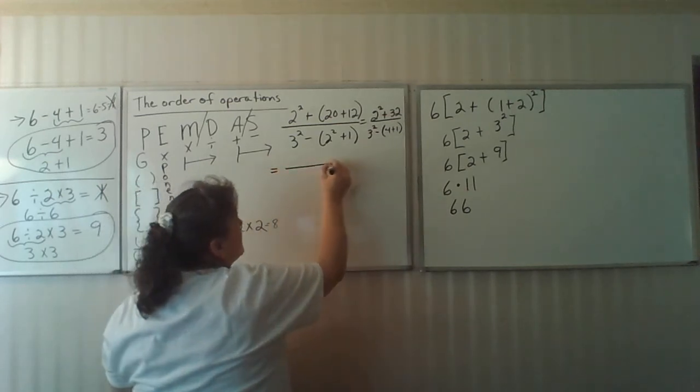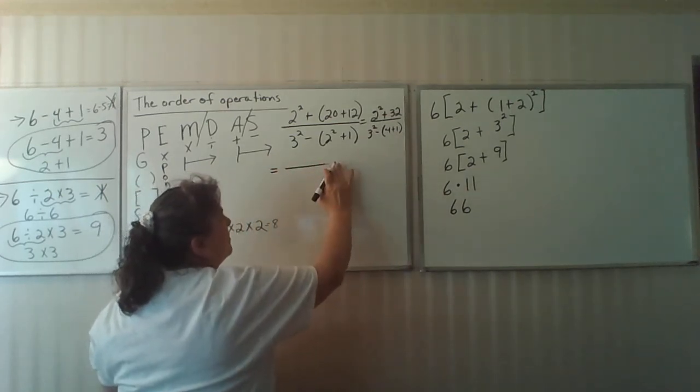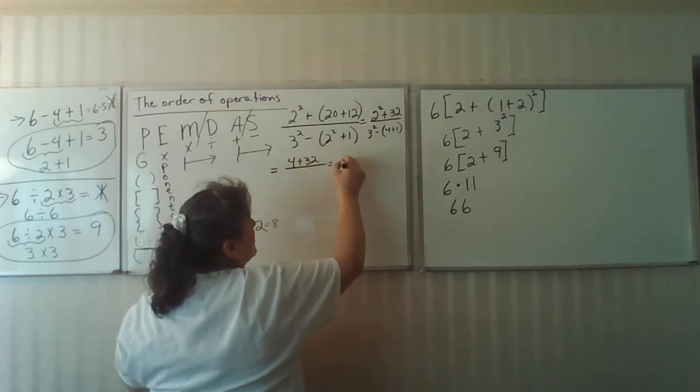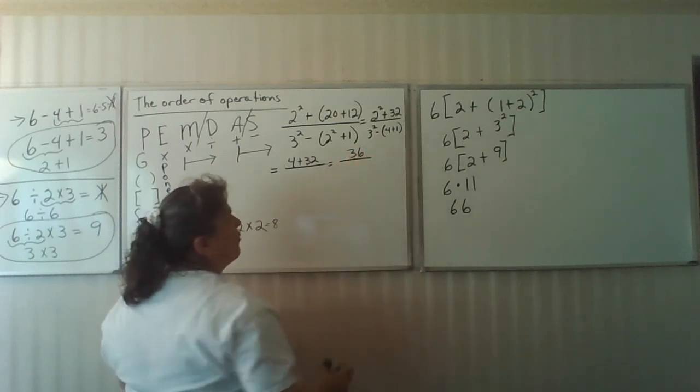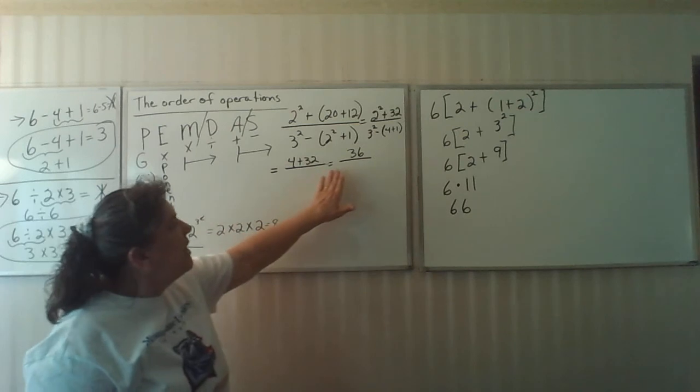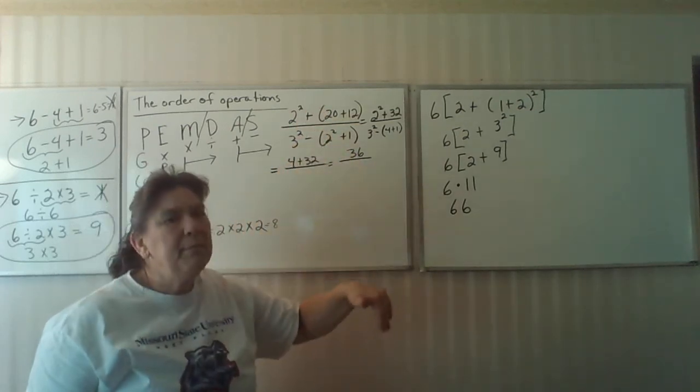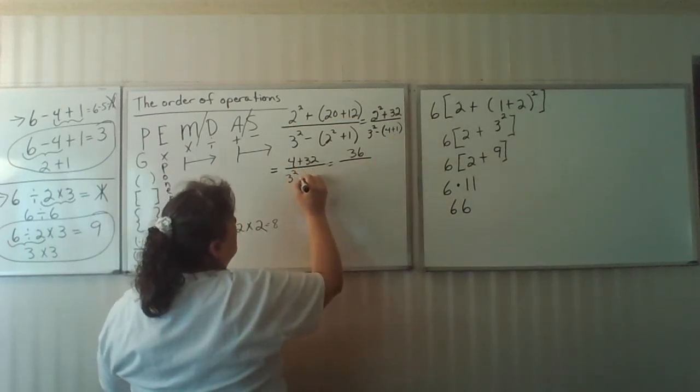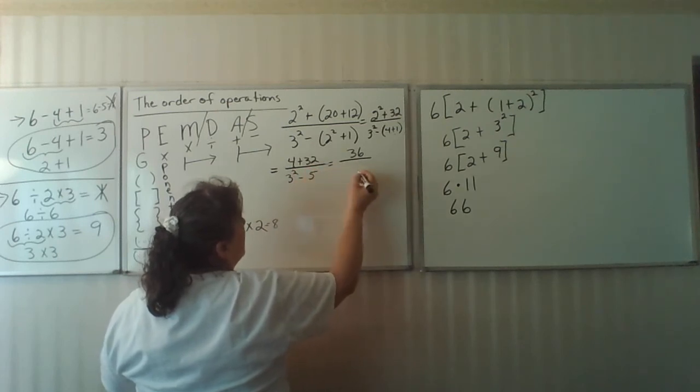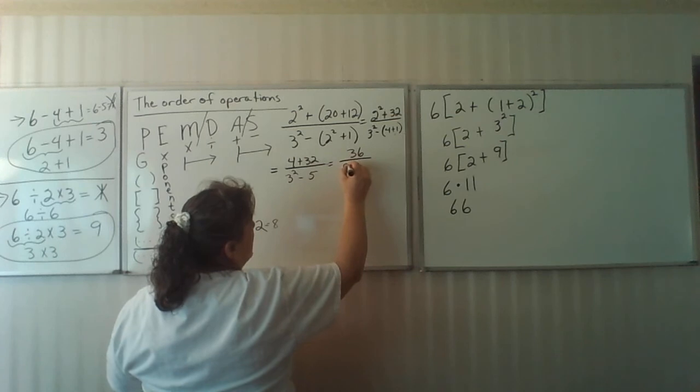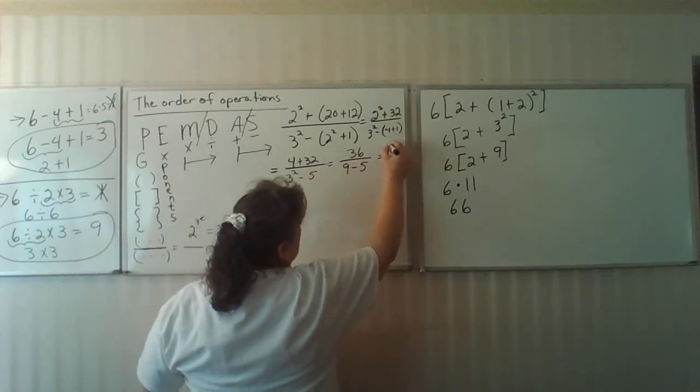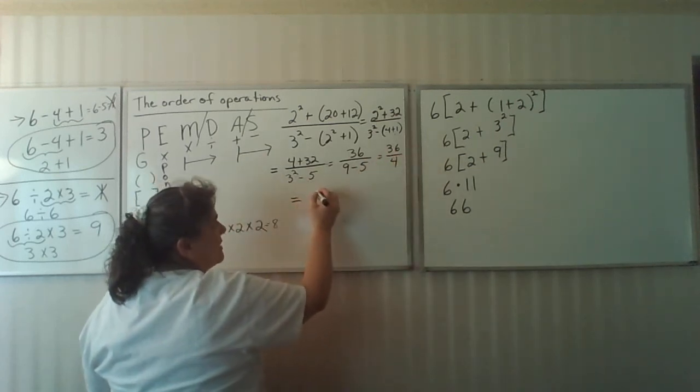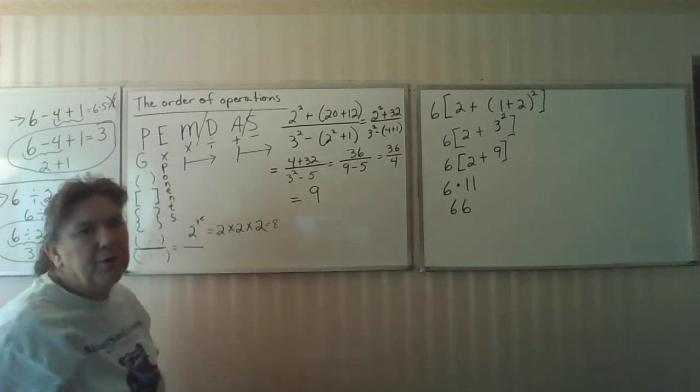Now we're going to go down to the next level. 2 squared is 4, so 4 plus 32. If you want, you can just go to the next one and say that's 36 because 4 plus 32 is 36. So you don't have to do top and bottom. You can do all the top and then do all the bottom if you want to. So here we have 5. So I have 3 squared minus 5. 3 squared is 9, so 9 minus 5 gives me 36 over 4. Now that division indicates 36 divided by 4, which is the number 9.